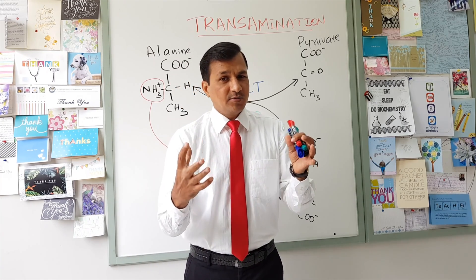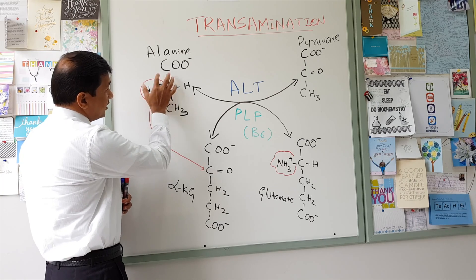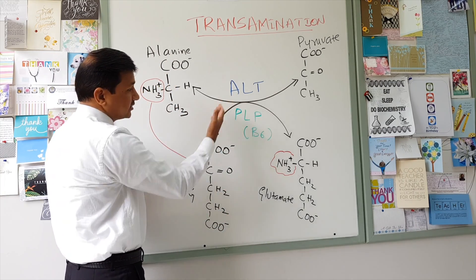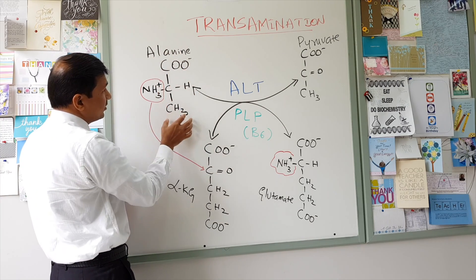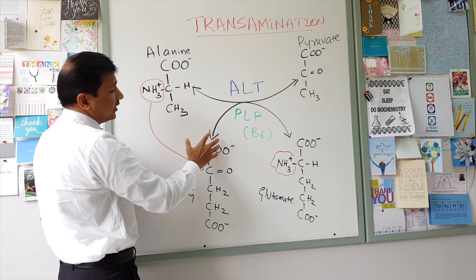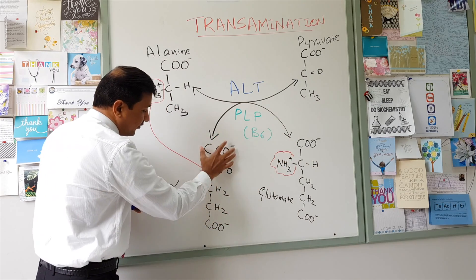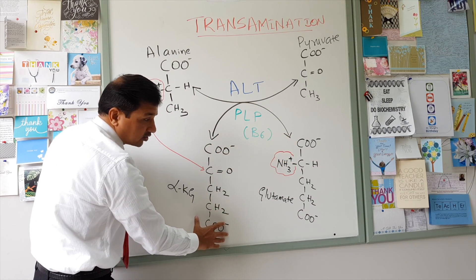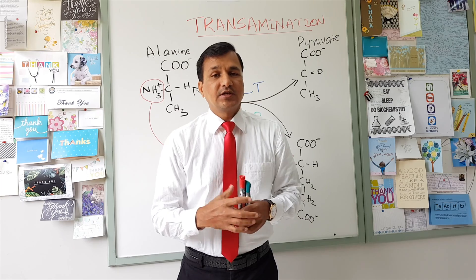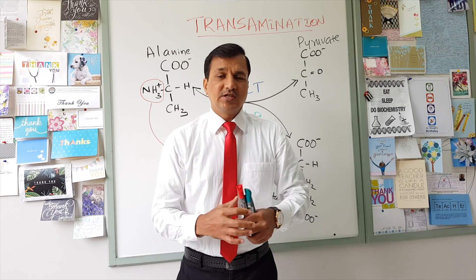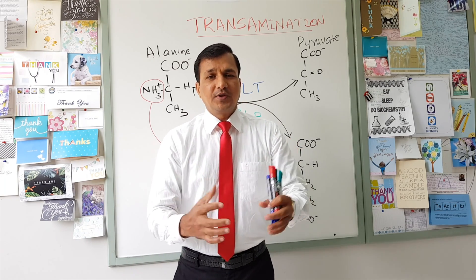Regarding tracking of carbons and nitrogen: if nitrogen is labelled in alanine, at the end of the reaction by ALT, you will find that nitrogen in glutamate. If you radiolabel carbons in alanine, at the end of the transamination reaction those carbons will be found in pyruvate. Similarly, all carbons of alpha ketoglutarate are found in glutamate. This is how we can track carbons and nitrogen participating in transamination reactions.